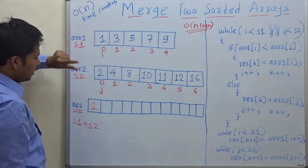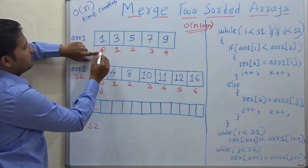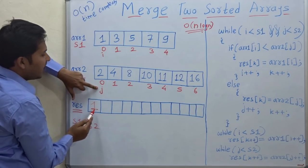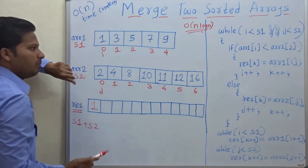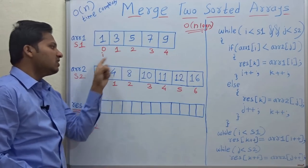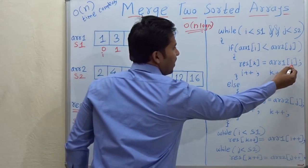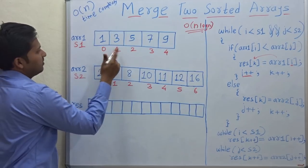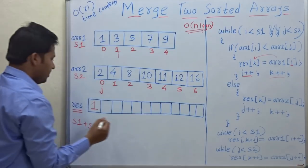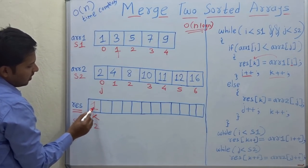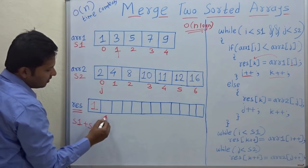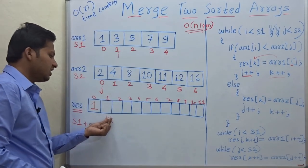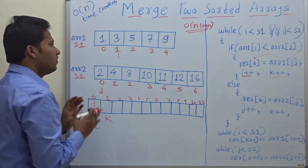After shifting the element pointed by i to the resultant array, i is incremented. Similarly, if the element at j is shifted, then j is incremented. Once we shift that element, we increment the respective variable. Because array1[i] was shifted, i is incremented. You also have to increment k, since position k now holds that element and we move to the next position. The indices used are 0, 1, 2, 3, and so on.